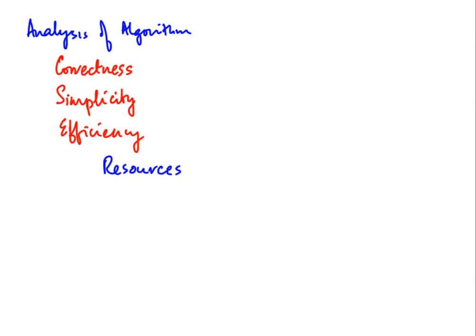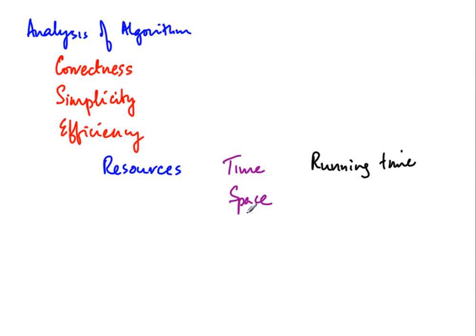The two most important resources we will look at are time and space. Time is running time — how long does the algorithm run before it produces the answer? If an algorithm is very slow, we may not get useful answers in the time available. The other resource is space, typically in terms of memory — how much auxiliary storage does our algorithm need? If it requires tracking too much information, the resources at our disposal may not permit an effective solution.